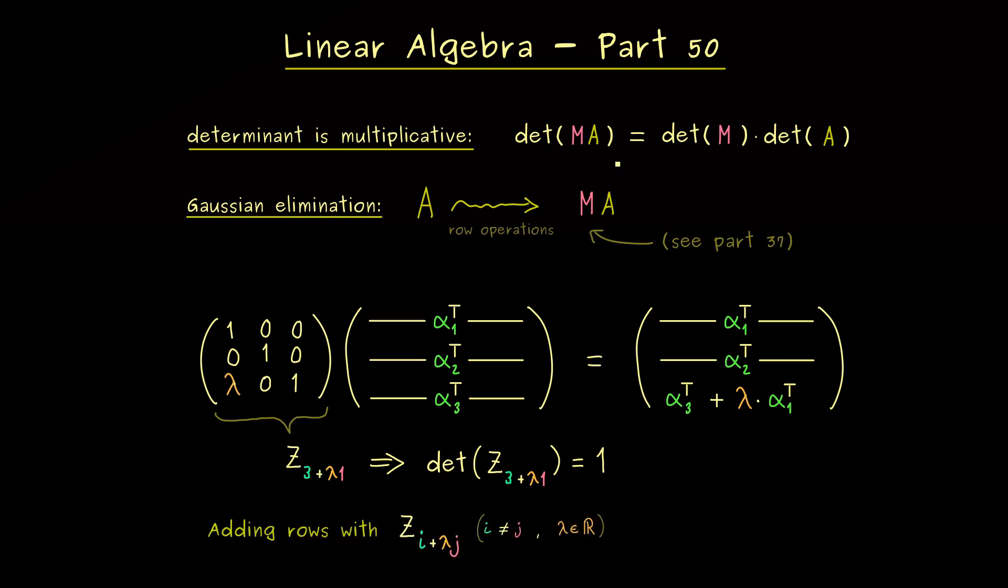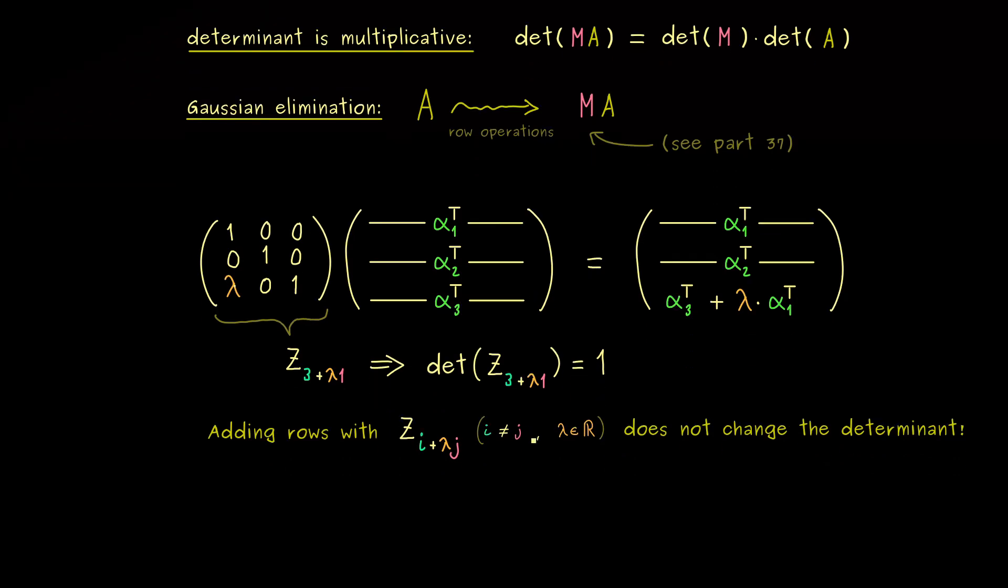And therefore, we can conclude, using our multiplication rule here, that adding rows in this sense does not change the determinant of A at all. This is a very nice result, because it allows us to simplify the matrix A inside the determinant.